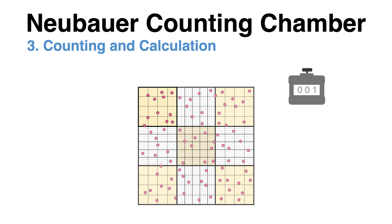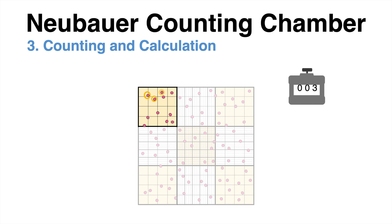Starting with the first square, all cells inside are counted. There is one cell touching the outer line of the square. You may wonder whether it belongs to the square or to the one below. The rule to resolve this issue is that cells which touch the lower or the right boundary are counted, but cells which touch the upper or the left boundary will not be counted.